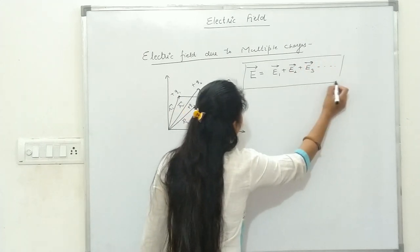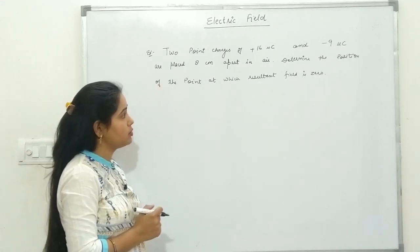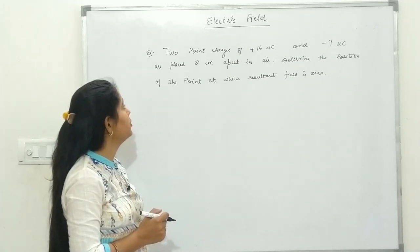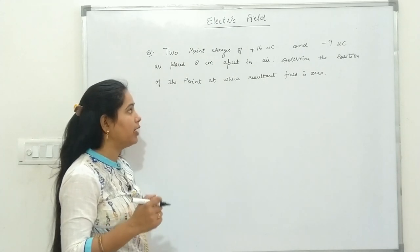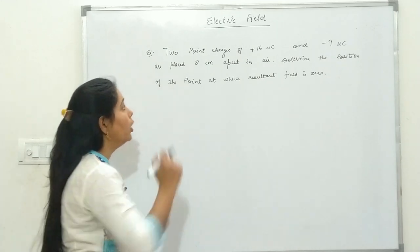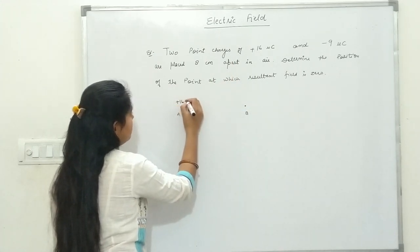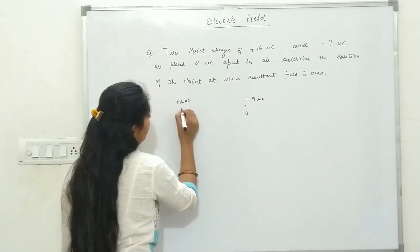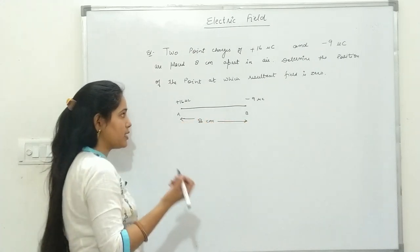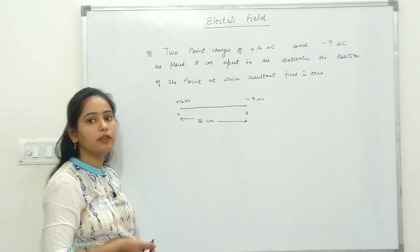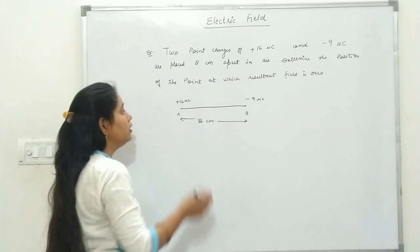Let's take an example: two point charges of plus 16 micro coulomb and minus 9 micro coulomb are placed 8 cm apart. Determine the position of the point at which the resultant electric field is zero. So we have charges A = +16 micro coulomb and B = -9 micro coulomb, separated by 8 cm. We need to find the point where net field is zero.